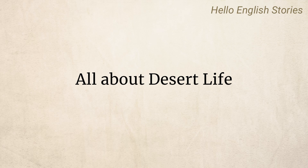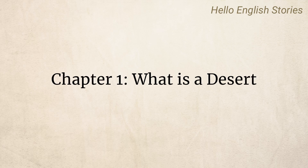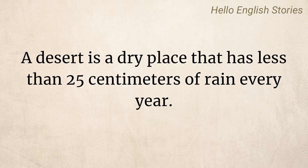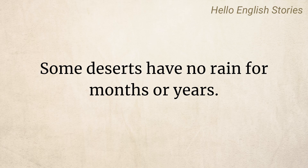All about desert life. Chapter 1: What is a desert? A desert is a dry place that has less than 25 cm of rain every year. Some deserts have no rain for months or years.